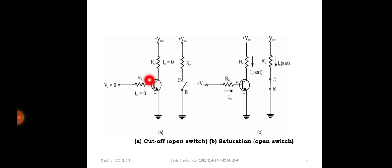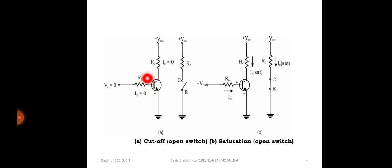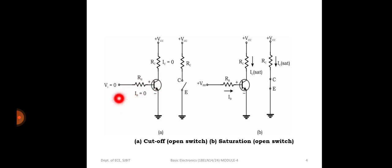The circuit considered has a transistor with a base resistance RB connected to the input, the emitter is grounded, and the collector is connected to +VCC. Whenever the input is equal to zero, the base-emitter junction is not in forward-biased condition. As a result, the base current IB is equal to zero.